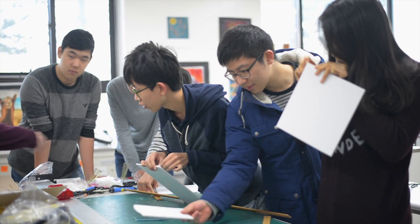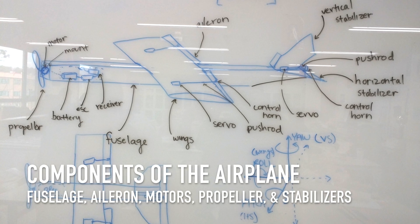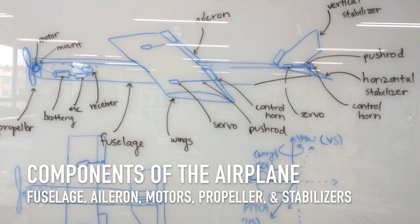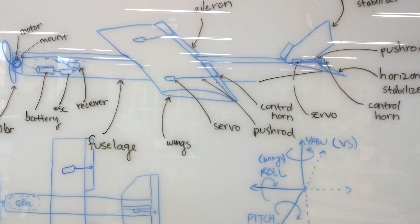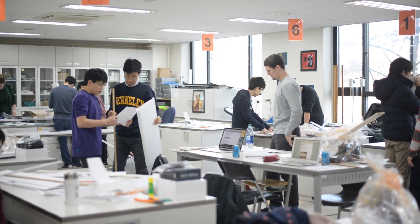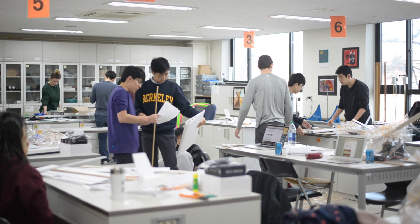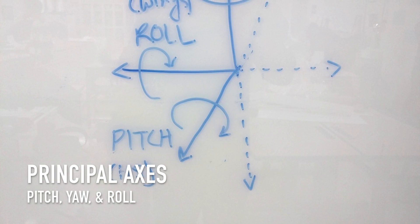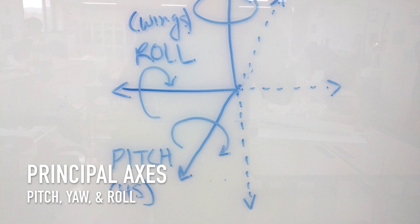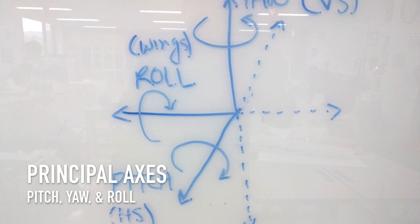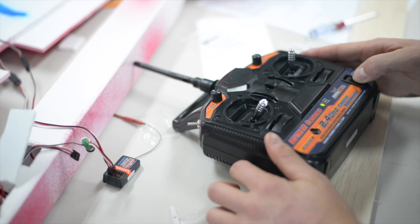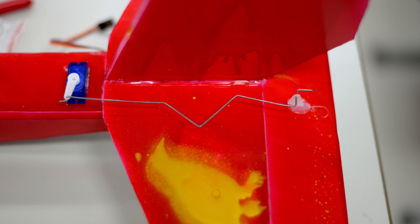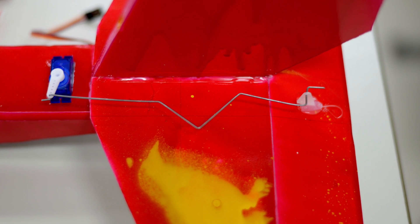Students learned about the different components of the airplane, such as the fuselage, aileron, motors, propeller, and vertical and horizontal stabilizers. It was crucial for them to understand what the role of each component was on the plane's flight. For example, the pitch was controlled by the horizontal stabilizers, the yaw was controlled by the vertical stabilizers, and the roll was controlled by the wings. They also learned about the electrical components, such as the battery, receiver, servos, push rods, and control horns.